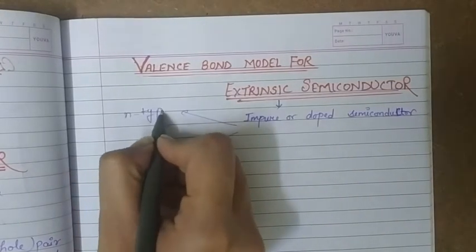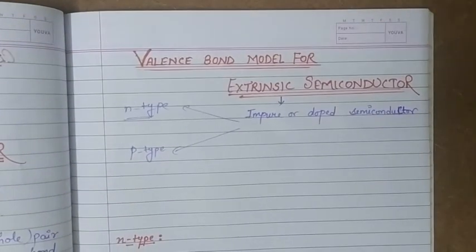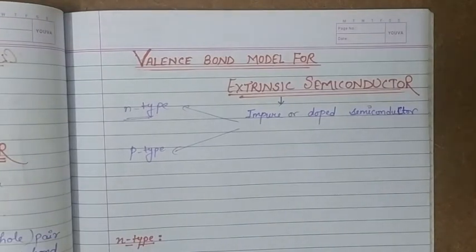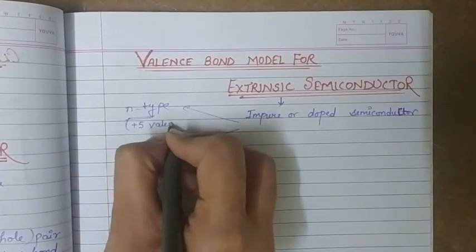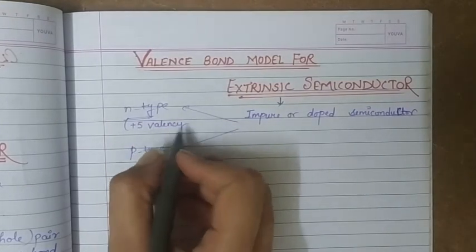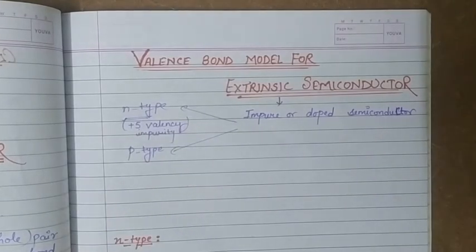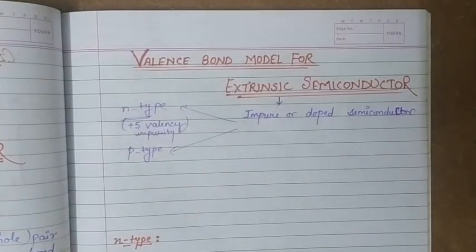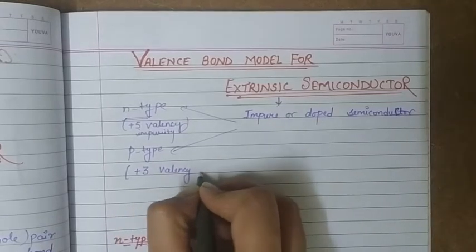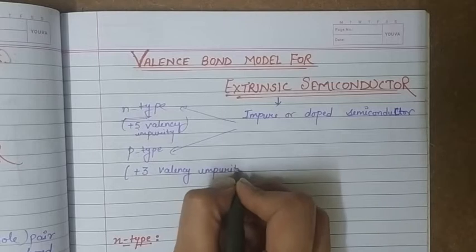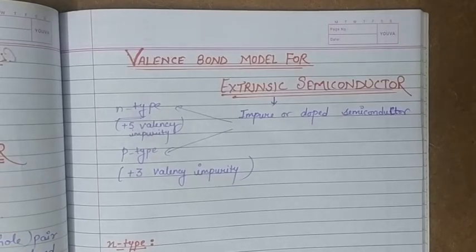The two types are n-type and p-type. N-type extrinsic semiconductors are those in which we add a pentavalent impurity atom — meaning atoms that have a valency of plus five. For p-type extrinsic semiconductors, we have to add a trivalent, or plus-three valency, impurity atom.